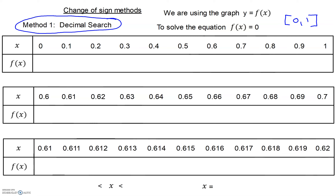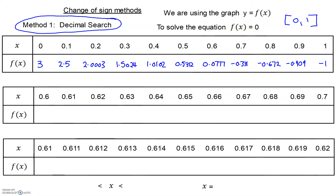Use the table to input the different values and create the same table, giving values of f of x from 0 to 1 going up in 0.1 steps. Hopefully you've got those values. We're going to look for a change of sign in f of x. You can see very clearly that happens between the x values of 0.6 and 0.7. Bear in mind what the graph looks like — the graph has gone from a positive f of x value to a negative, so it must have cut the x-axis. Our root must lie between 0.6 and 0.7, and that becomes our new interval. We're now going to break that interval down into 0.01 steps.